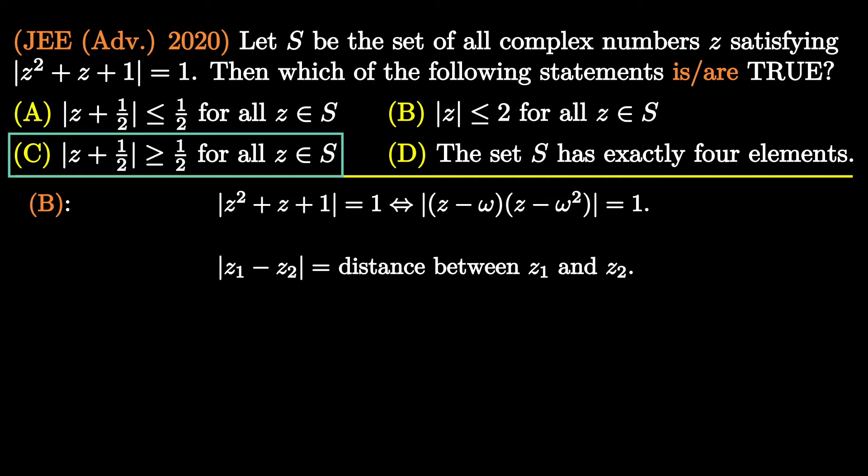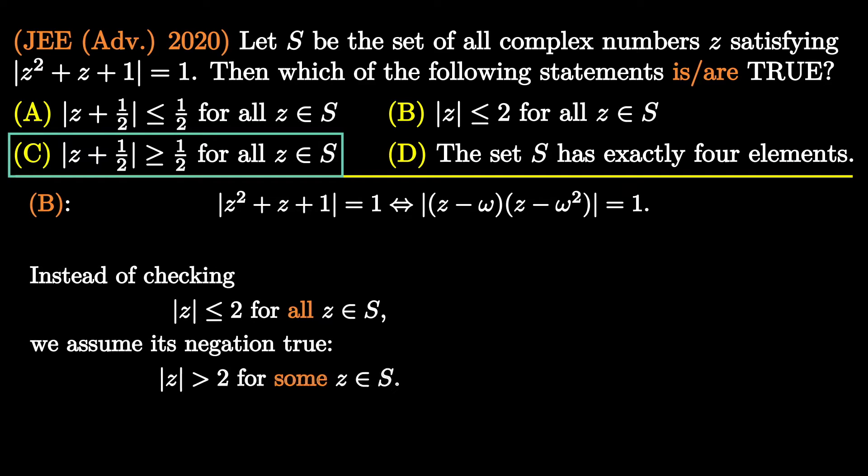The idea is to use the fact that |z₁ - z₂| is nothing but the distance between two complex numbers z₁ and z₂. Instead of checking option B directly, we assume its negation is true. If this assumption leads us to a contradiction, it would prove that our assumption was false, and hence option B would be true. This method is popularly known as the method of contradiction.